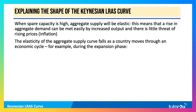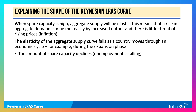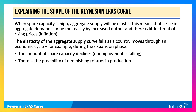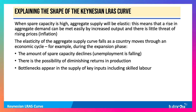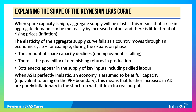So if, for example, we are in the boom — rapid growth, expansion phase — the amount of spare capacity goes down, unemployment's going down, and the amount of firms operating at full capacity goes up. There's also the possibility of diminishing returns in production, and bottlenecks start appearing in the supply of key inputs, including raw materials, components, and skilled labour.